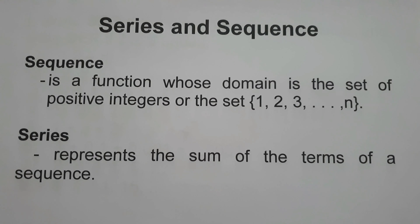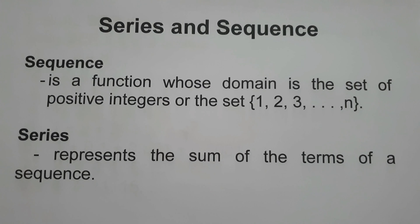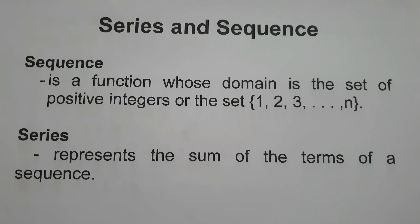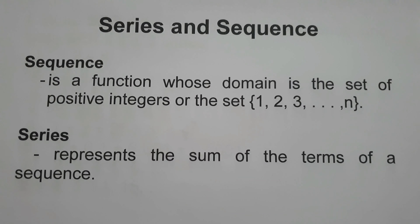When we say sequence, it is a function whose domain is a set of positive integers — the set of numbers 1, 2, 3, up to n. While a series is the representation of the sum of the terms of a sequence. To identify whether a given example is a series or a sequence: a sequence is a list of numbers separated by commas, while a series is a sum of numbers separated by a plus or minus sign.